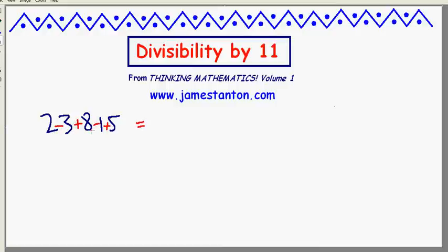Let's work out that sum. 2 minus 3 is negative 1, plus 8 is 7, minus 1 is 6, plus 5 is 11. And the claim is, if the answer here is a multiple of 11, which it is, that means the original number was also a multiple of 11.